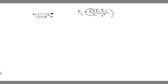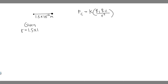So we need k, we need the charge of particle 1, particle 2, and then the distance between the two. We're told the distance between the two particles, which we denote as R, is equal to 1.5 times 10 to the minus 12 meters.